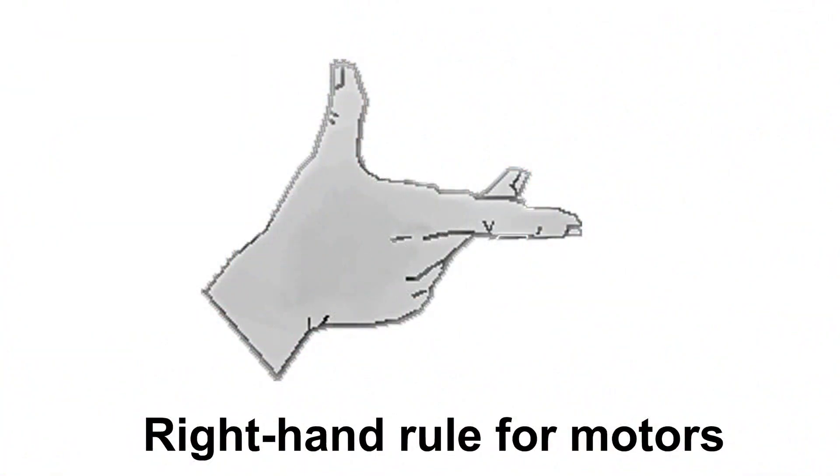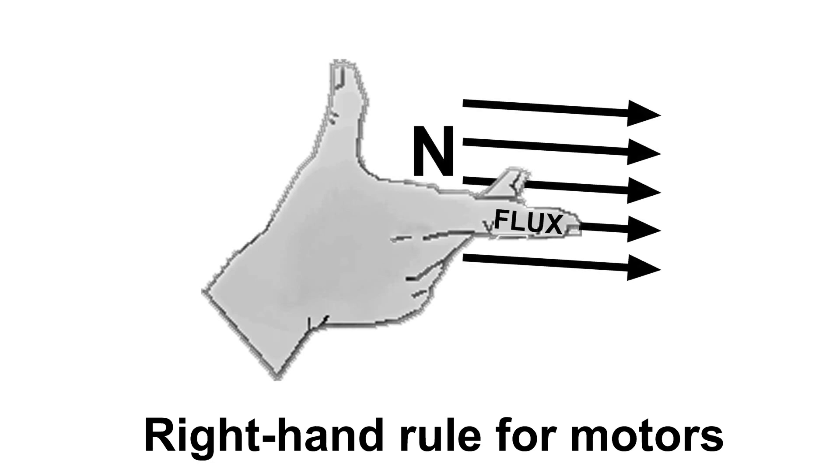This is the right-hand rule for motors. If we have a north pole here, the index finger is pointing in the direction of the magnetic flux. And this time, if we put a current in the wire from negative to positive in this direction, it will cause that wire to be pushed in this direction.